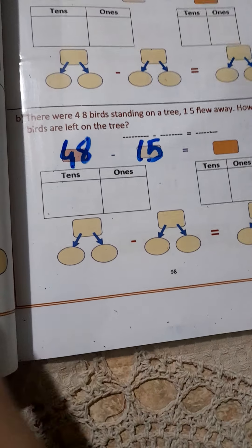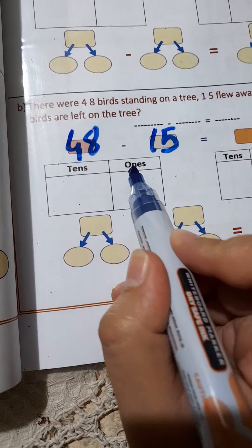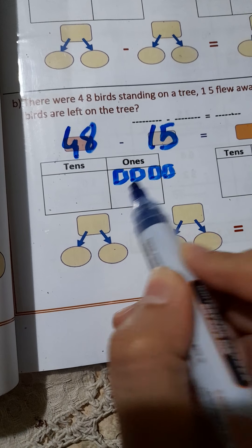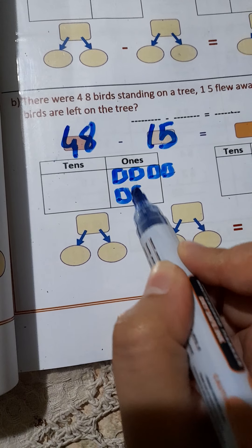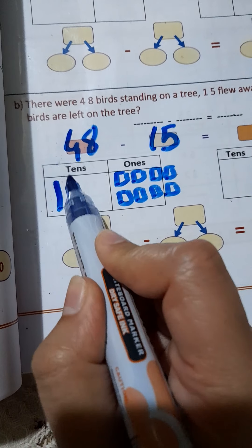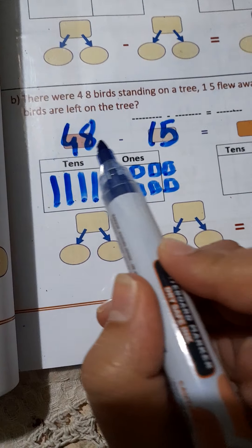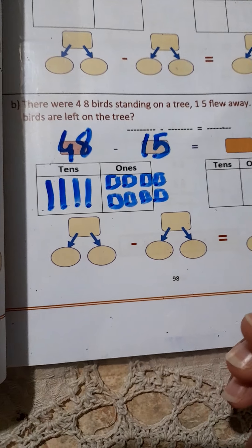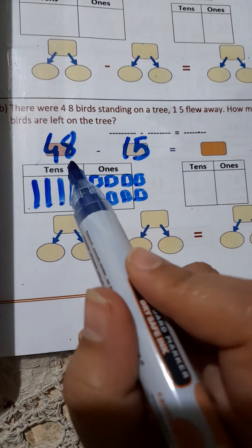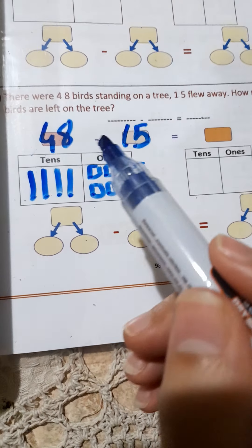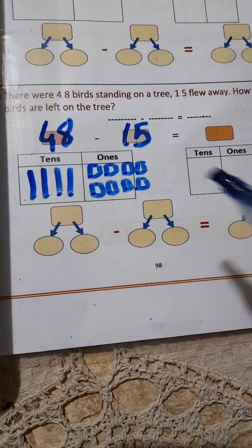Use the place value mat to find the result. For 48: I have 8 ones and 4 tens. In a subtraction operation, we start with ones — ones minus ones, put the result in the ones place. Then tens minus tens, put the result in the tens place.